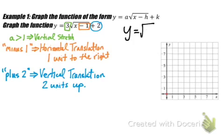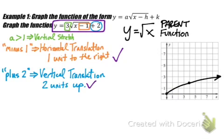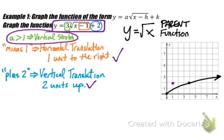Let's look at the parent function y equals the square root of x — no 3 in front, no minus 1 in the square root, and no plus 2. Comparing what we have to graph with the parent function: we have a vertical stretch so it should be taller, we're moving the graph to the right one unit, and two units up. Starting with our starting point — moved right one and up two — that's my first point.